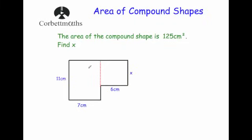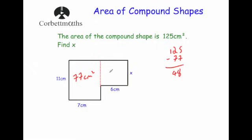The left-hand rectangle is 7 times 11, which equals 77 centimeters squared. The whole shape is 125 centimeters squared, so I subtract 77 from 125, which gives 48 centimeters squared. That means the area of the right-hand rectangle must be 48 centimeters squared, since the two areas must add up to 125.